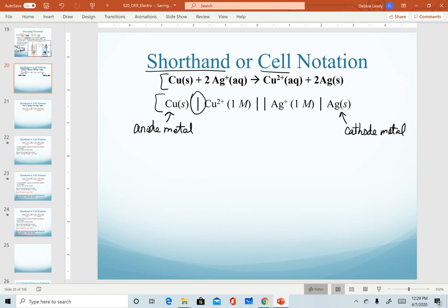We use a single vertical line to represent a phase separation. And so notice that happens in both the anode compartment and the cathode compartment. And by phase separation, I mean we're literally just showing a distinction between the solid and the solution that are in a single compartment.